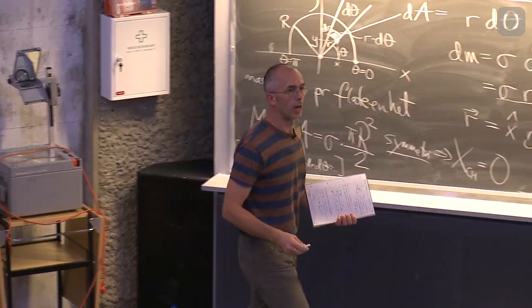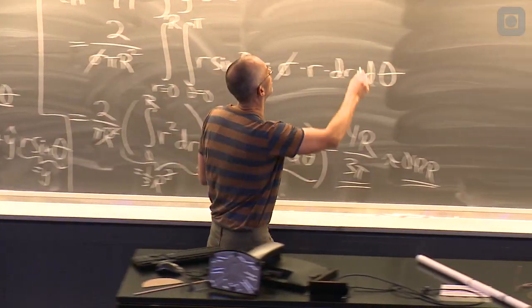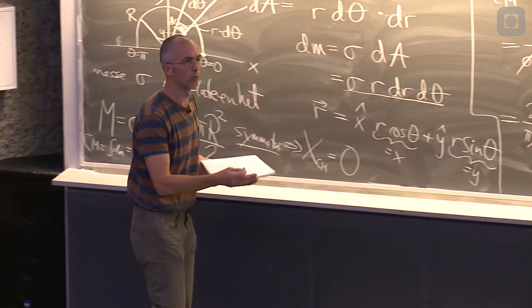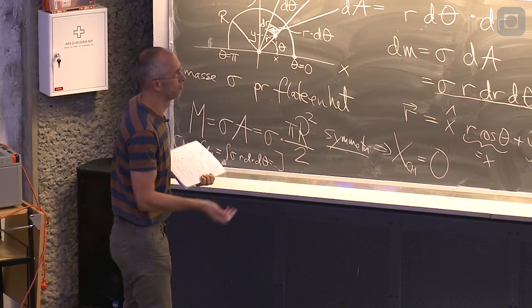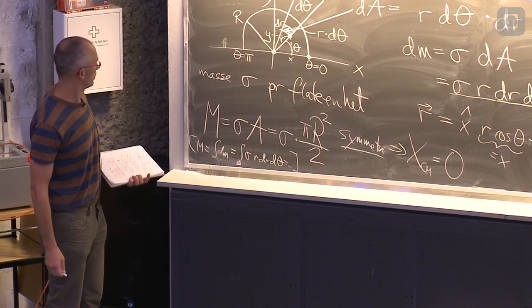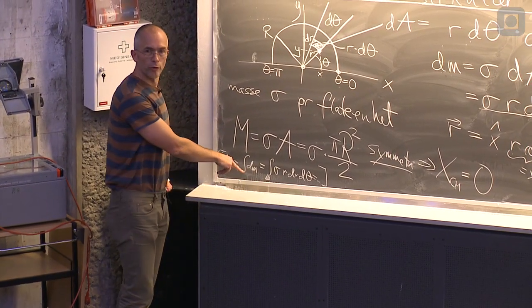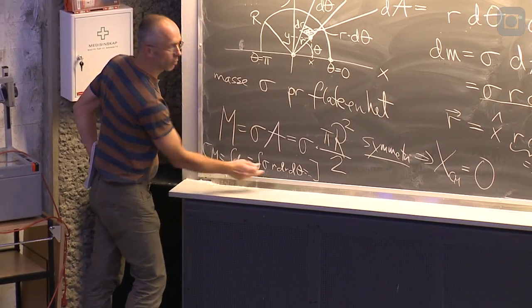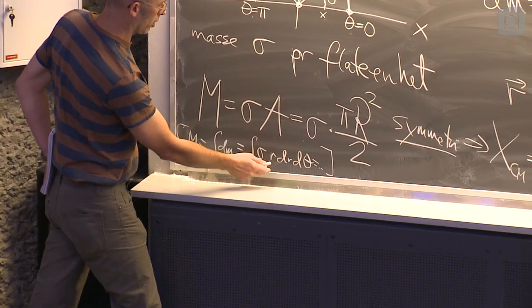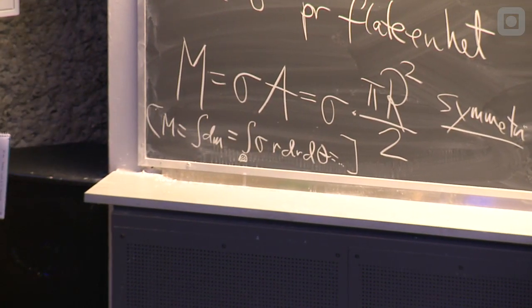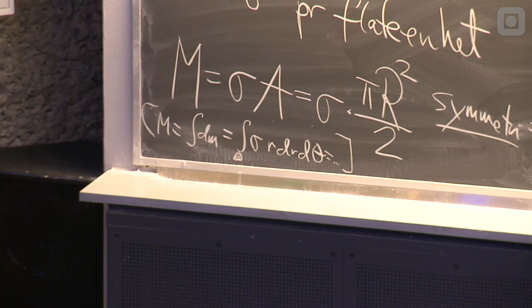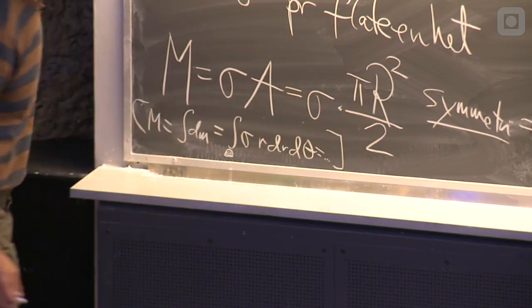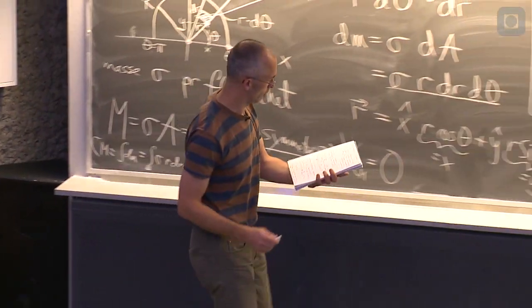Så da har vi lært flate integral, integral over to dimensjoner, for å regne ut noe sånn som det her da. Du må jo selvfølgelig gjøre akkurat det samme her. Integrere fra 0 til store r over r, og integrere fra 0 til pi over vinkelen theta. Da skulle det ikke forundre meg om du fikk det svaret der. For total massen.